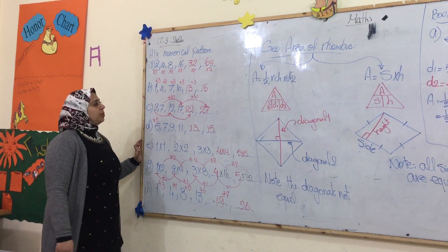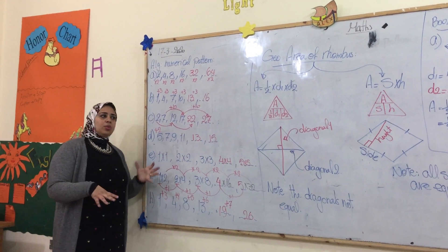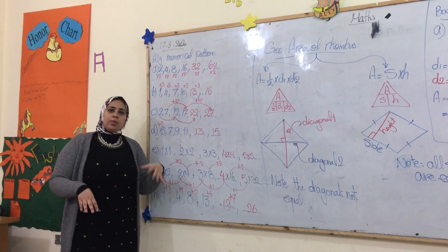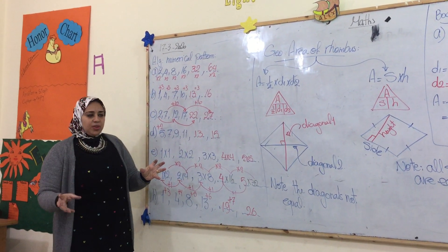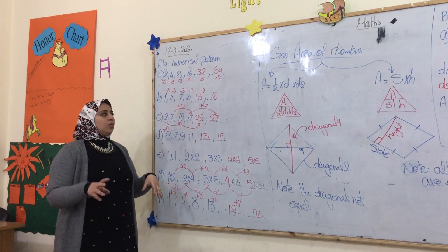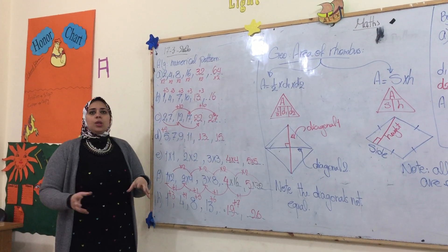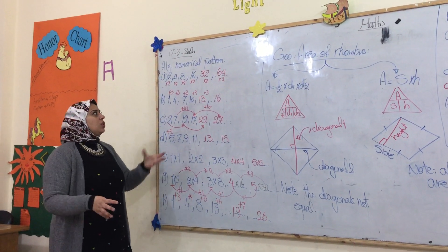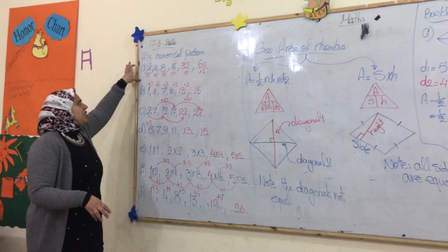The number one is the numerical pattern. We have to know that. We have to check every time the numbers that are given to us, to know the button that I will choose. We can add, we can multiply, we can divide, we can jump by tens. So let's check some examples here.